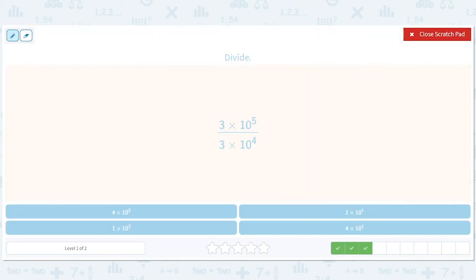Okay, these 3s cancel out. 5 minus 4 is 1. So we get 10 to the 1. We get 1 times 10 to the 1.